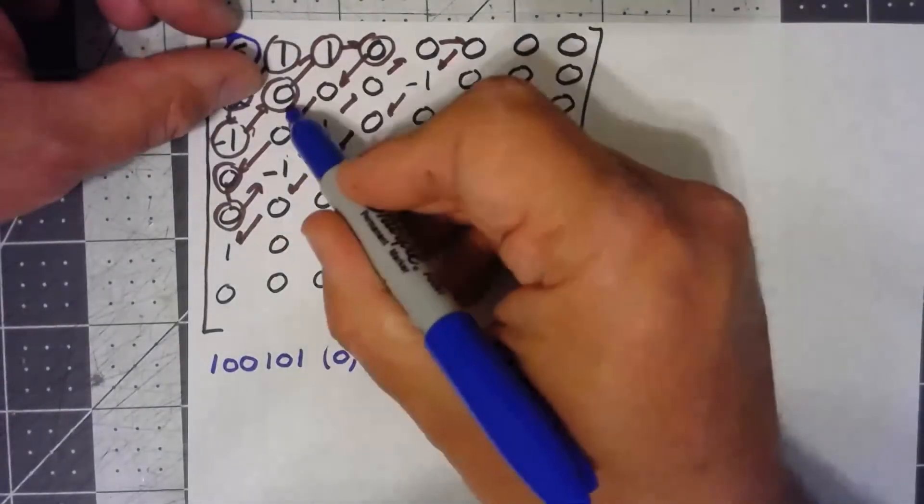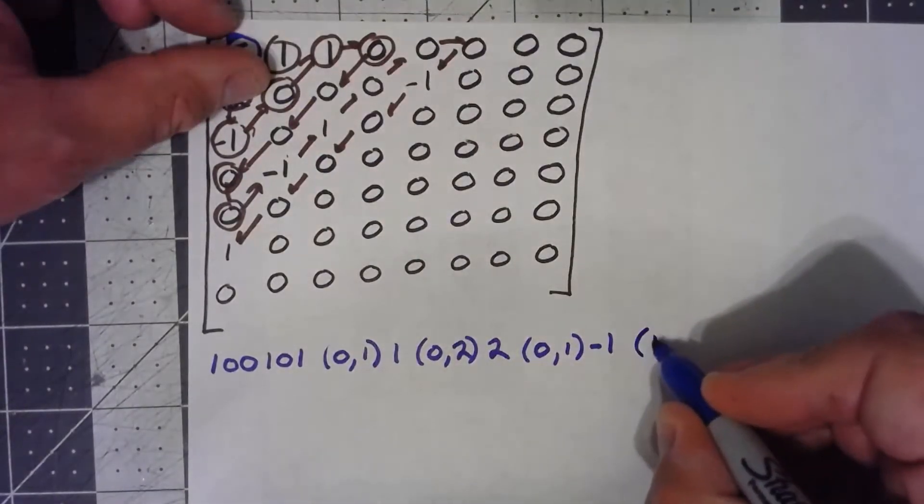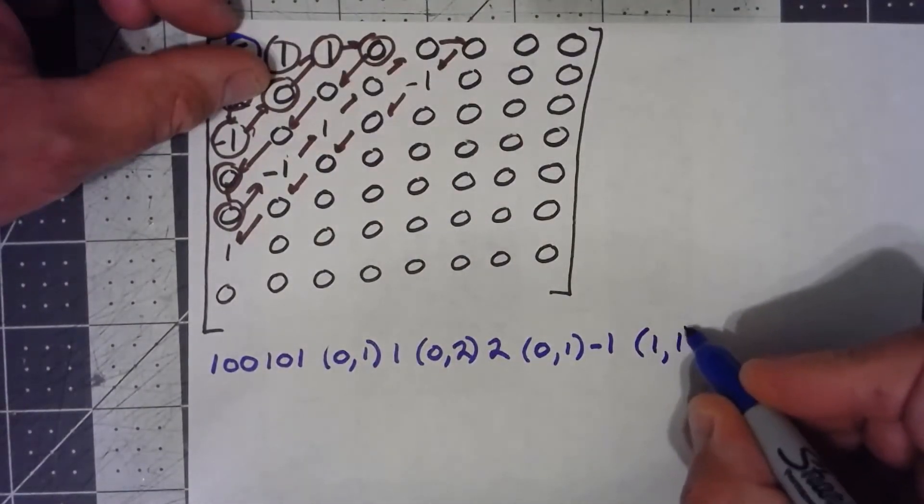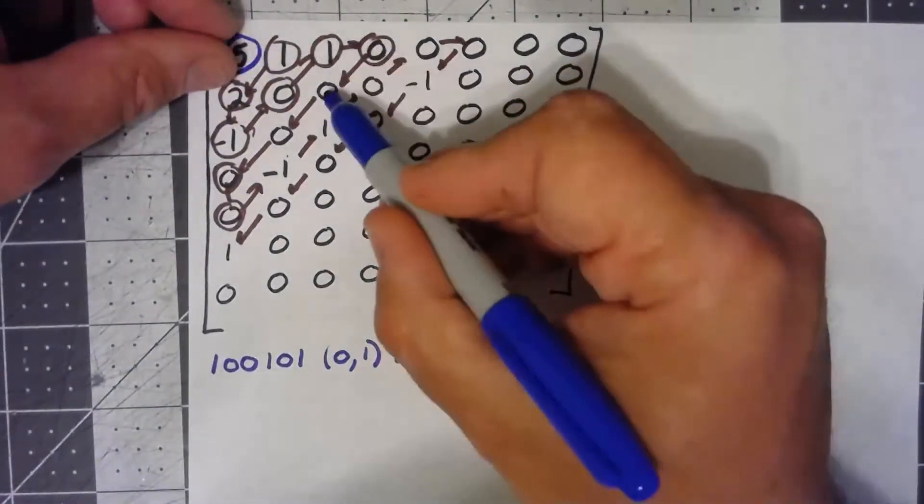Now, from here to here though, now we've got a zero in between. There's one zero in between, one bit to encode a one. Then we have one, two, three, four, five zeros before one bit to encode a negative one.